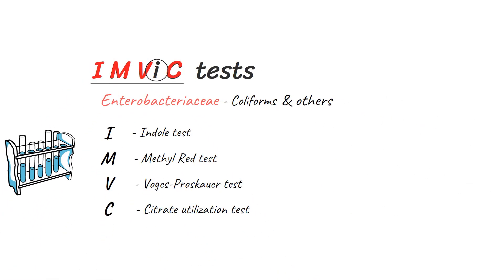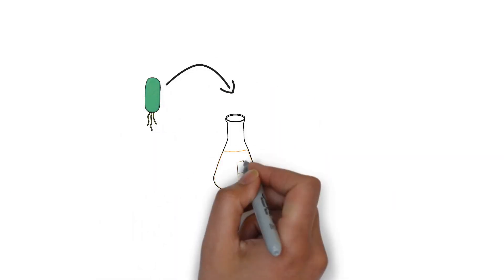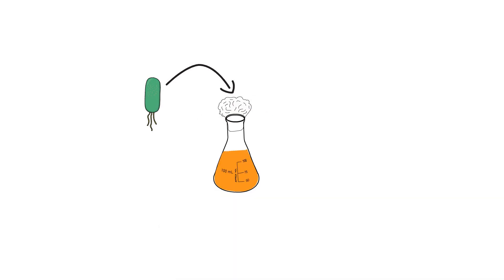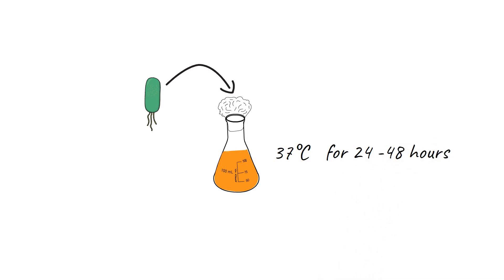The purpose of these tests is to study the biochemical properties of unknown bacteria and characterize them. To perform IMVIC tests, inoculate the bacterial culture in a suitable medium and grow at 37 degrees Celsius for 24 to 48 hours. This is going to be our sample for IMVIC tests.